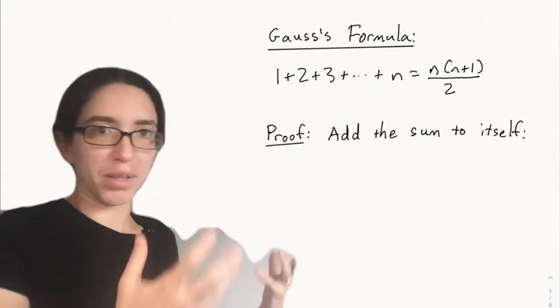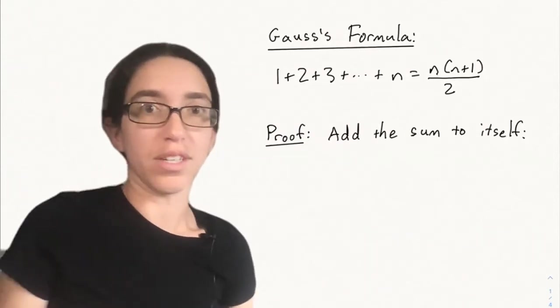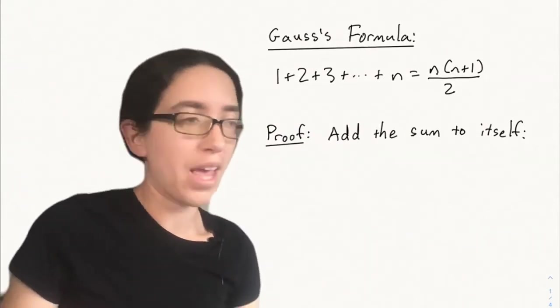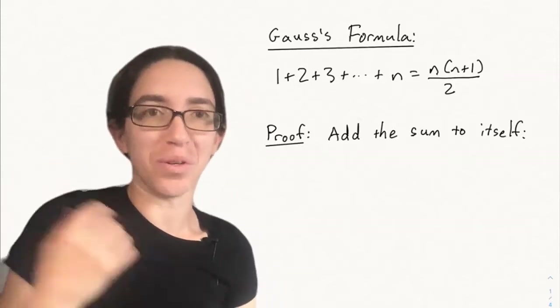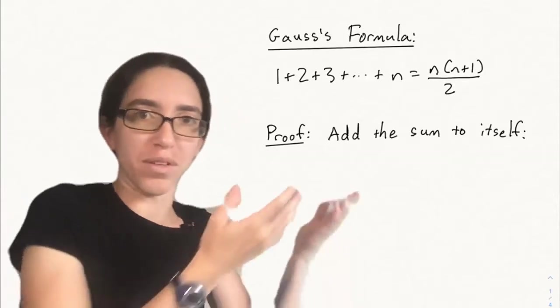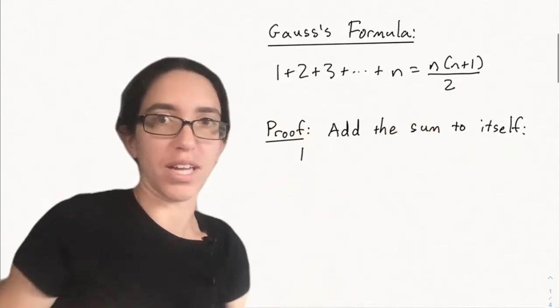So Gauss, the famous mathematician Gauss, when he was a child, his teacher asked him to add up all the numbers from one to a hundred, and he didn't feel like doing it just by adding them one at a time, so he came up with this formula that the sum of the numbers from one to n, the triangular number, is n times n plus one divided by two.